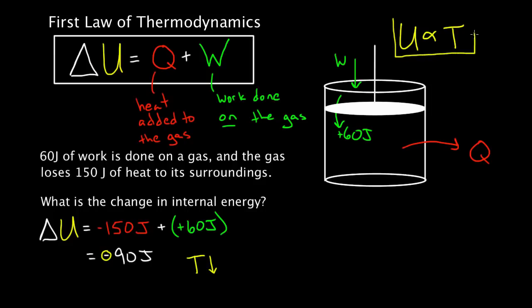This is an important key fact: whatever the internal energy does, that's what the temperature does. An increase in internal energy means an increase in translational kinetic energy, rotational kinetic energy, and vibrational energy — temperature is also a measure of that internal energy. Note that we cannot say exactly how much the temperature dropped. A loss of 90 joules does not mean a loss of 90 degrees — they are proportional, not equal. You would have to know more about the makeup of this gas to determine that.